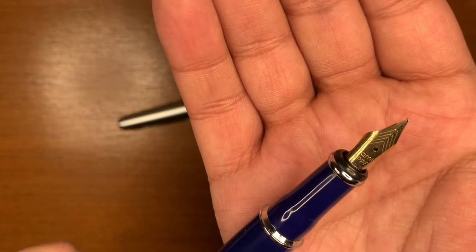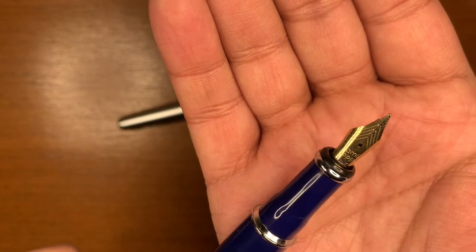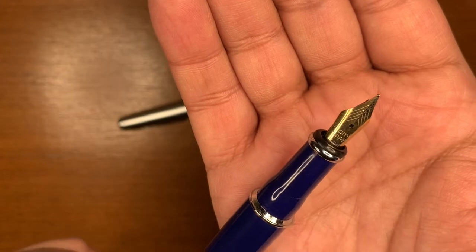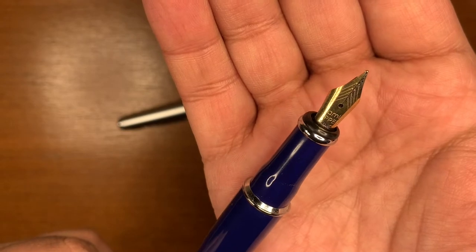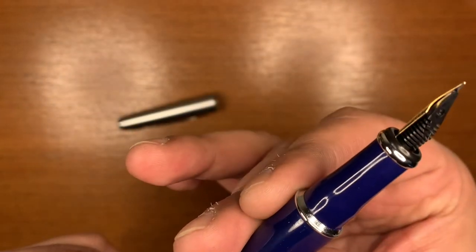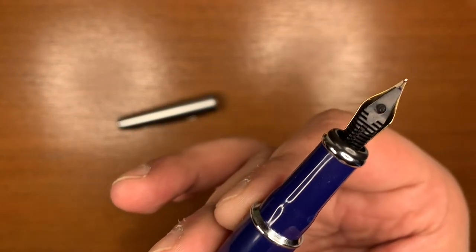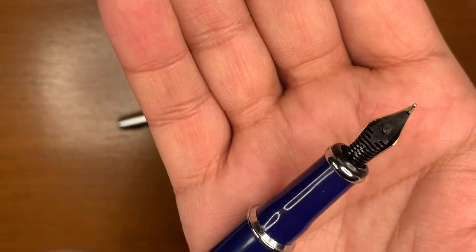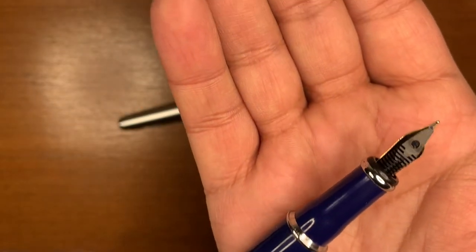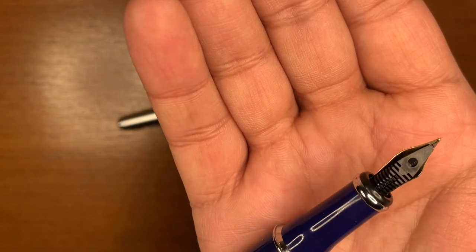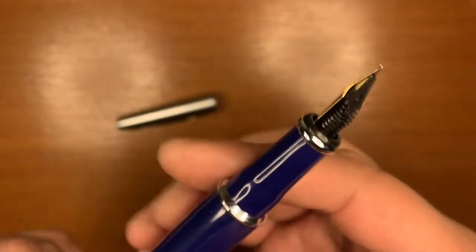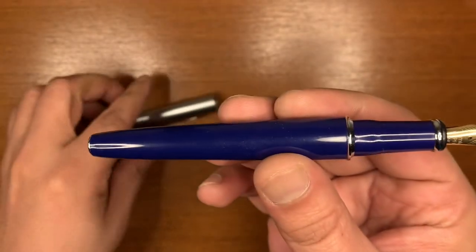The nib is not bad. It looks quite nice. It's fairly simple with some scroll work and it says Camlin tipped fine. Let's take a look at the feed. The feed seems plastic to me. There's something written over there. It says 16. I'm sorry if you can't make it out but I don't know what that means. Anyway, moving on.